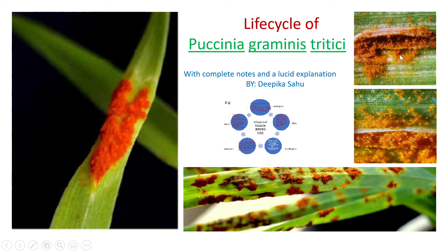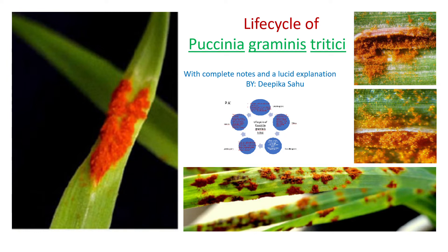Welcome to Biology with Deepika. In this video we will be learning about the life cycle of Puccinia graminis tritici. This obligate parasite infects the wheat plant and appears reddish-brown or sometimes reddish-black in color, found like sticks or pistils on the leaf. This video will give a complete and simplified explanation of the life cycle.